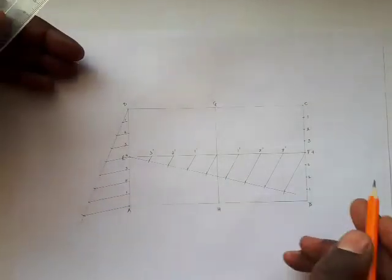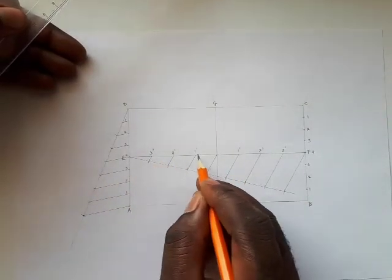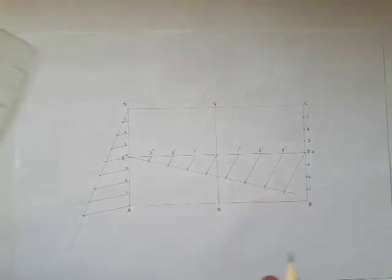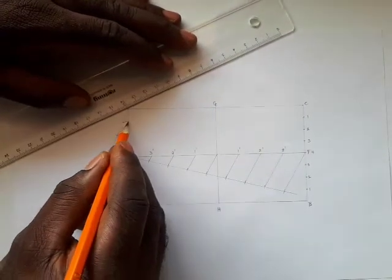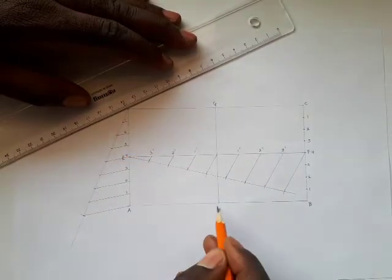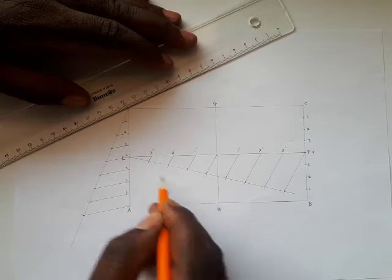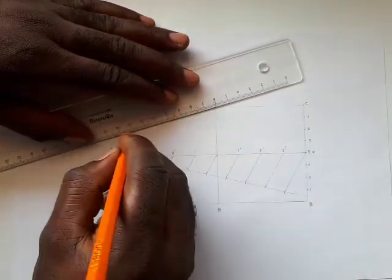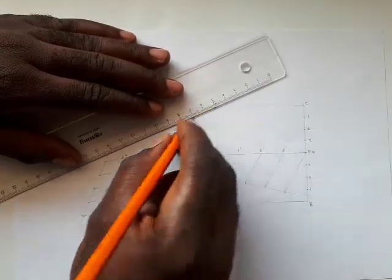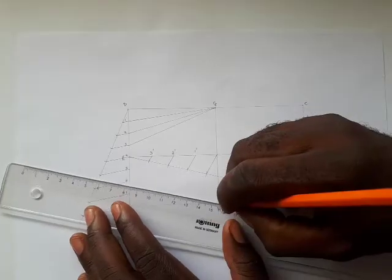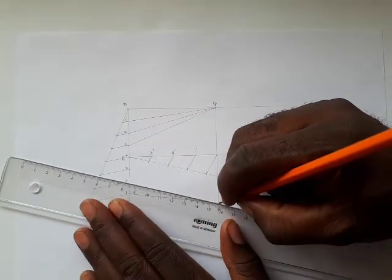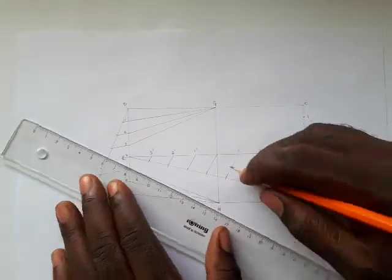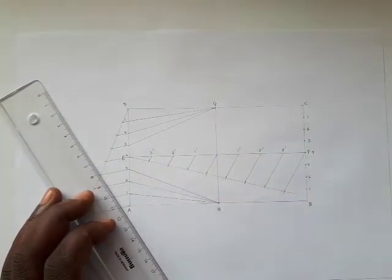There you have 8 equal divisions. Label them 3 prime, 2 prime, 1 prime, 1 prime, 2 prime, 3 prime — all 8 equal divisions: 1, 2, 3, 4, 5, 6, 7, 8. Now connect G to point 1, G to point 2, G to point 3, and H to point 1, H to point 2, H to point 3, using thin lines. Do the same for the other side: H to 1, 2, 3 and G to 1, 2, 3.